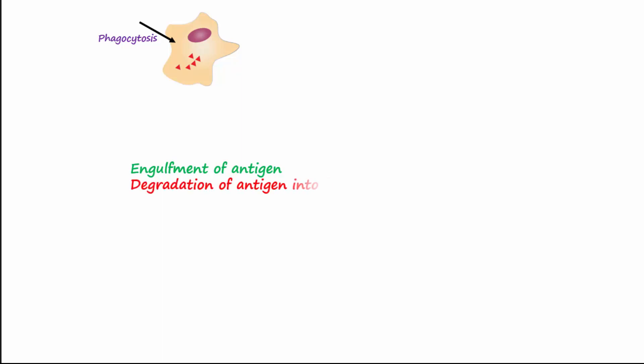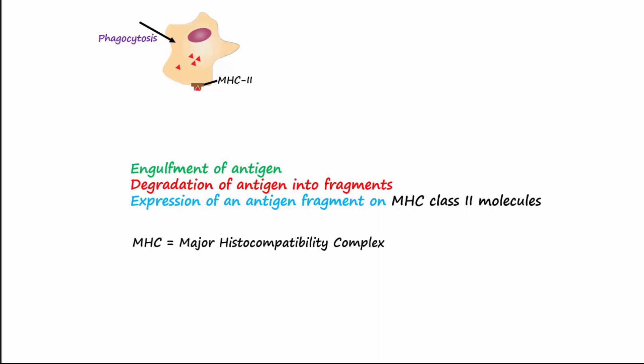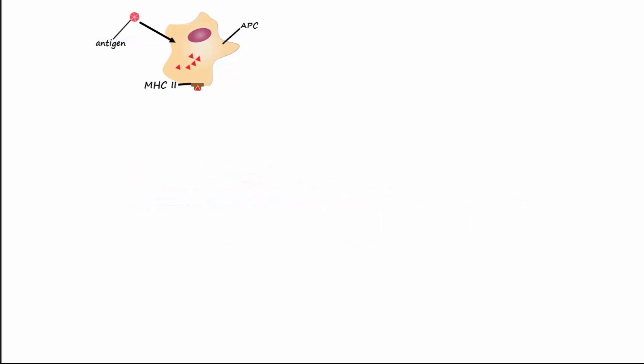The antigen is finally expressed as a fragment of the original antigen using an MHC class 2 molecule. MHC stands for major histocompatibility complex. The antigen presenting cell or APC travels to underlying tissue where it begins to encounter many T lymphocytes. The APC presents the processed antigen to naive helper T cells.